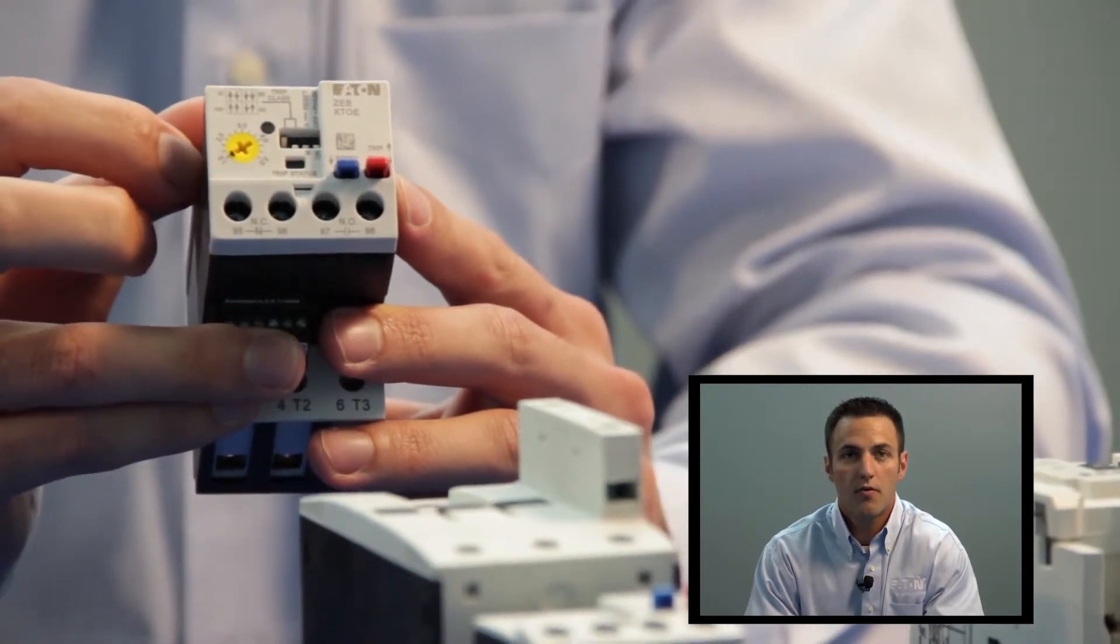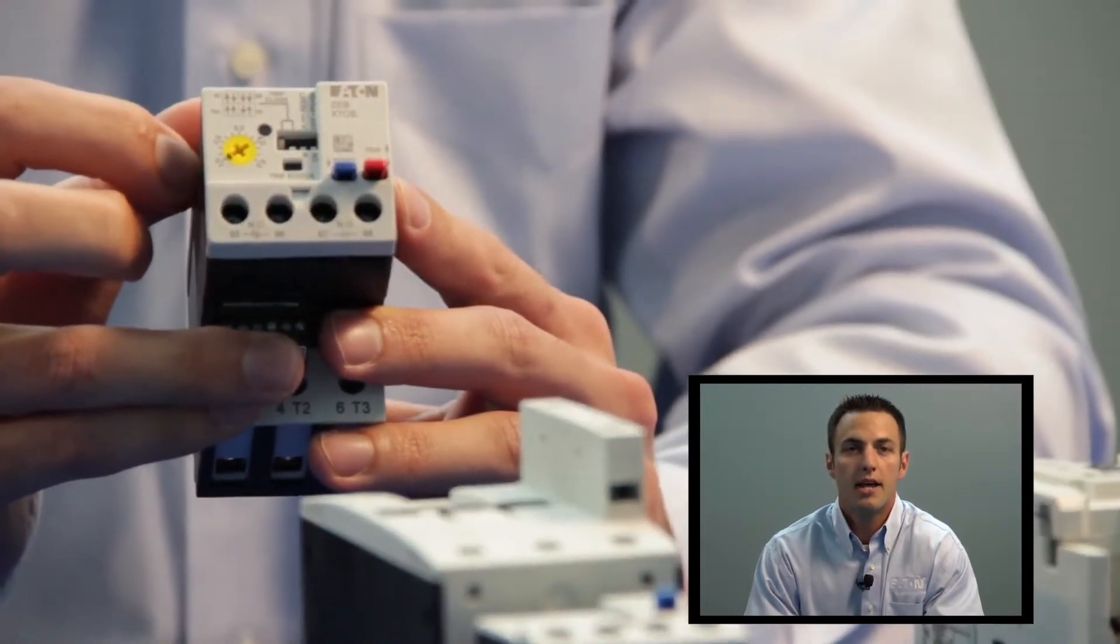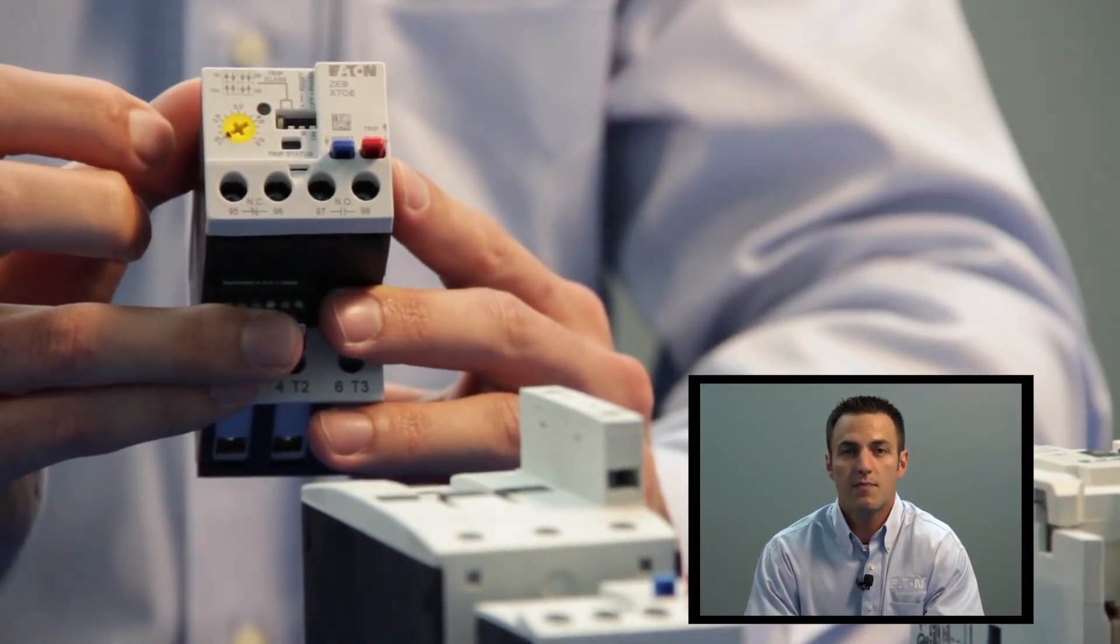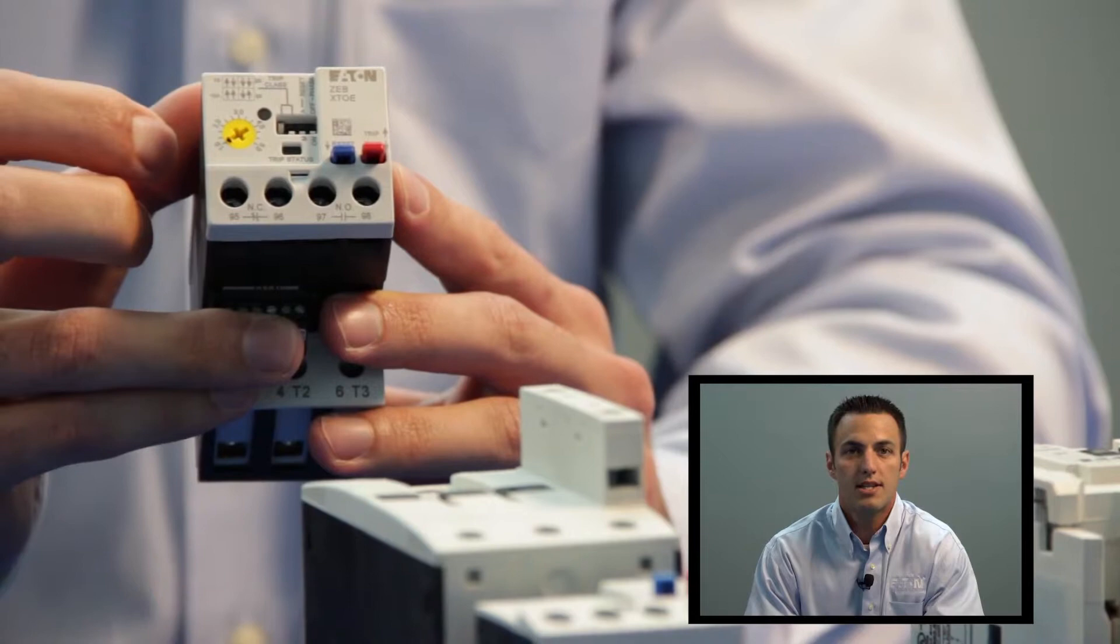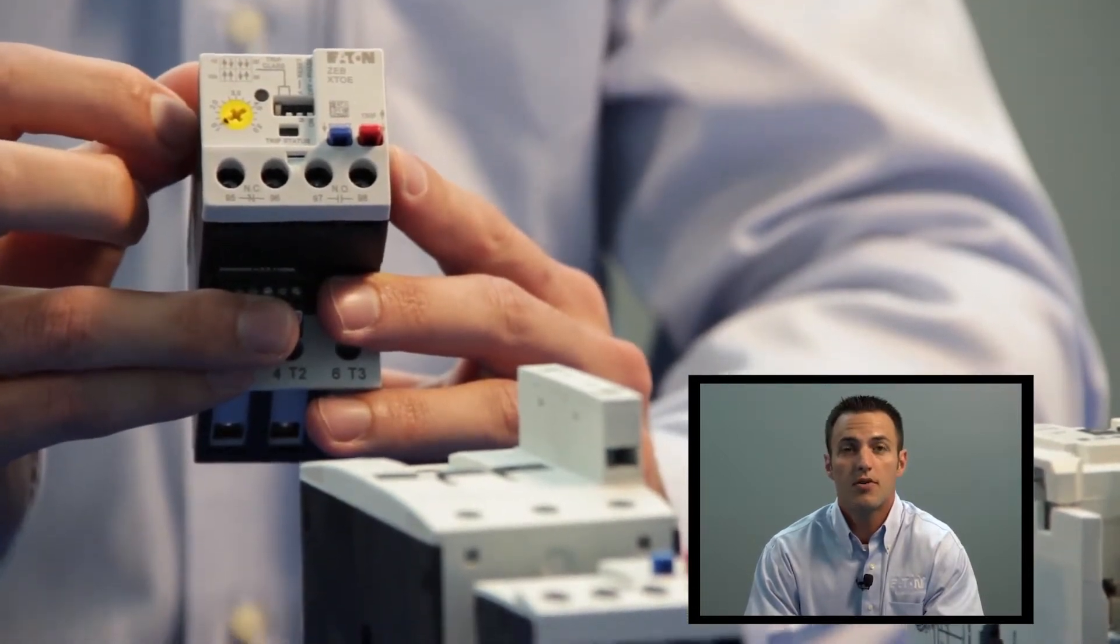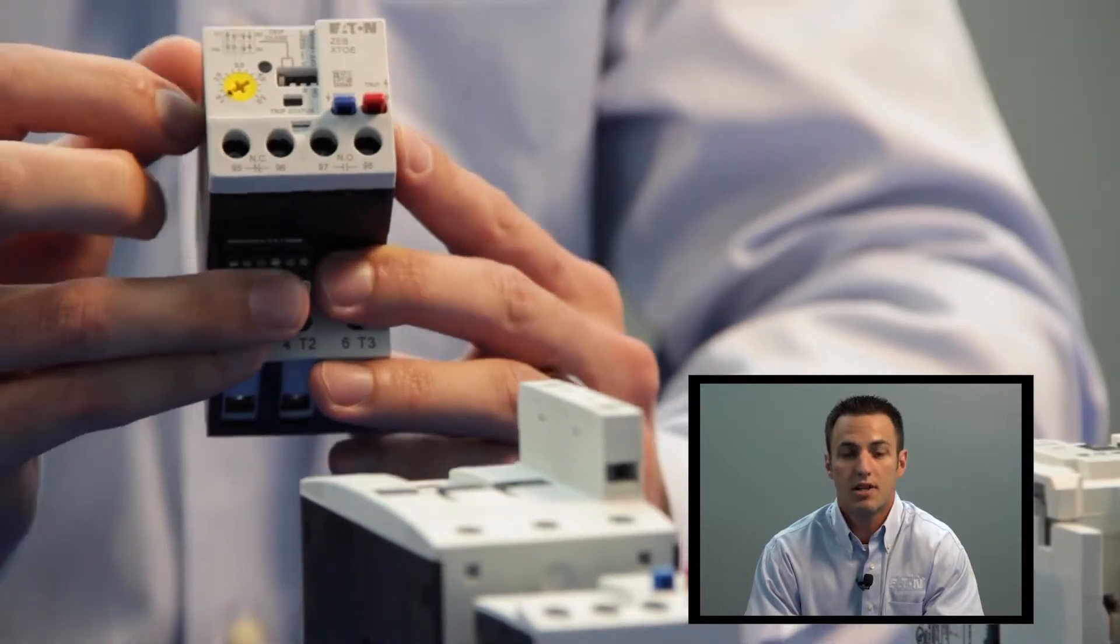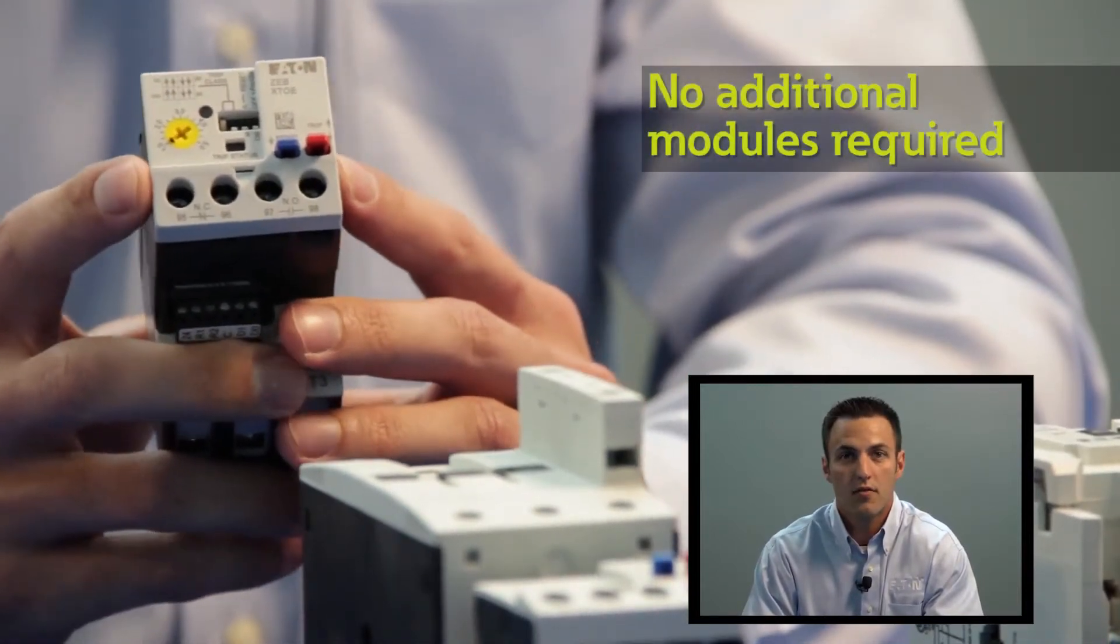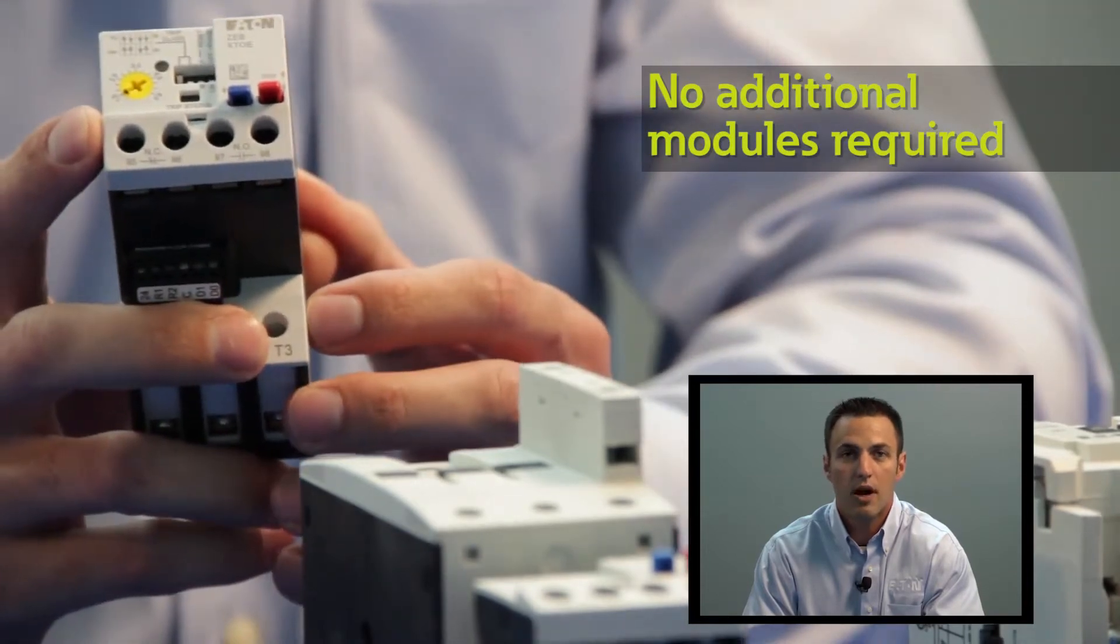The first two dip switches allow you to set the motor trip class. Options are available for class 10A, 10, 20, and 30. The third dip switch is used to select between manual and automatic reset, and the fourth dip switch is used to enable or disable the internal phase imbalance protection. No additional modules are needed for that feature. It's built right into the overload, so there's no snap-on module required for phase imbalance.